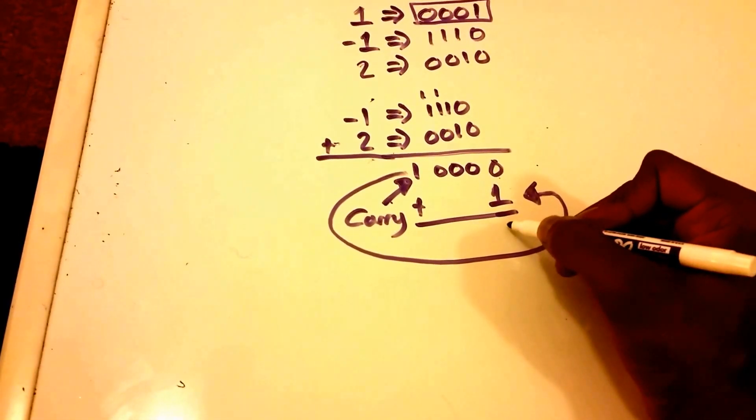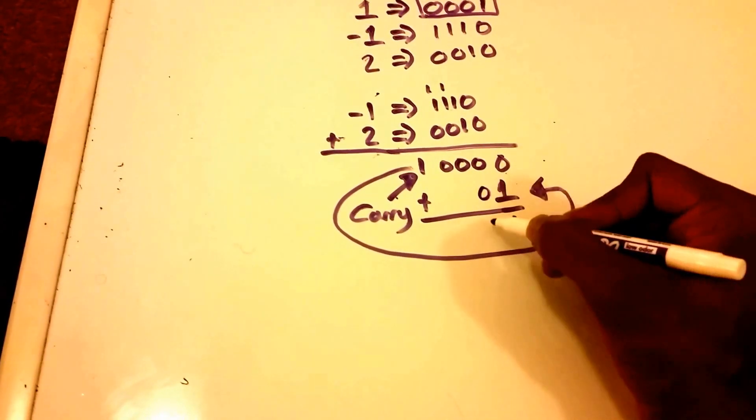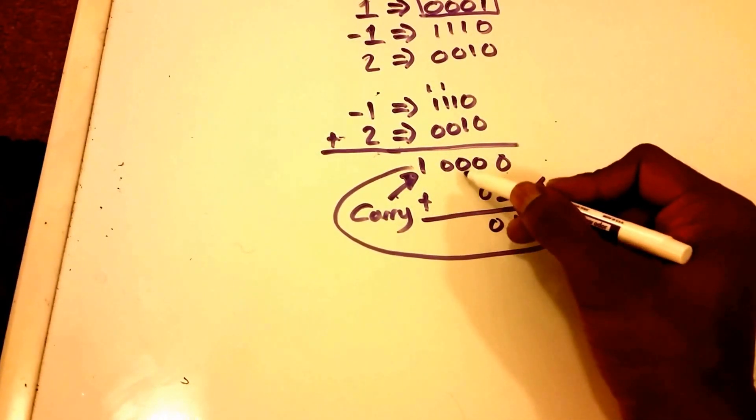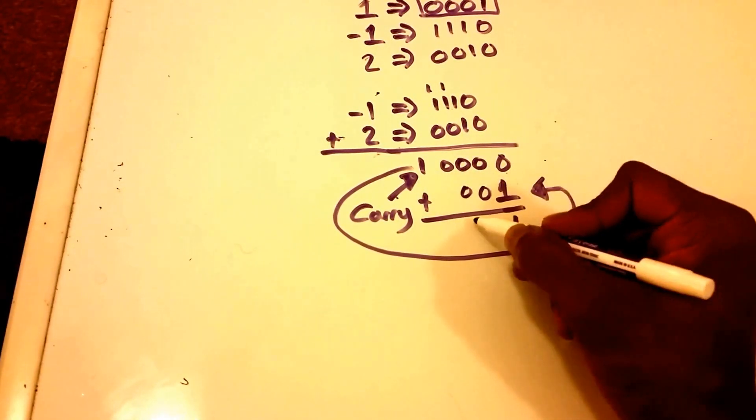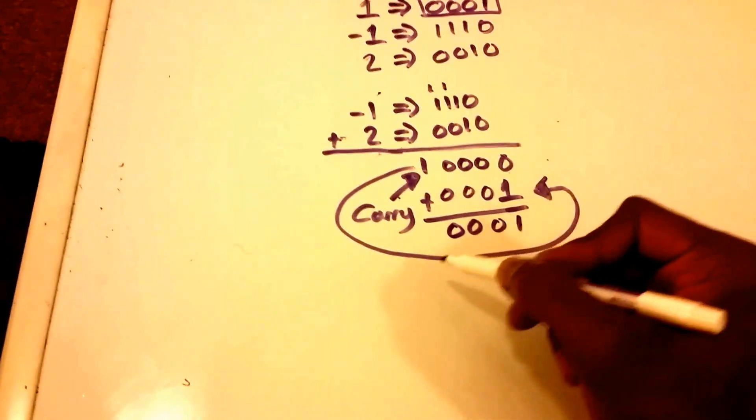And now what we do is our normal binary addition. So we get zero plus one which is one, and then we get zero plus, there's a zero there, an implicit zero, and zero plus another implicit zero, and then zero plus another implicit zero.